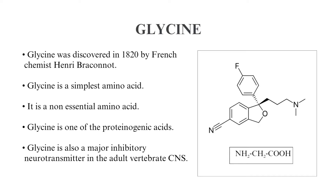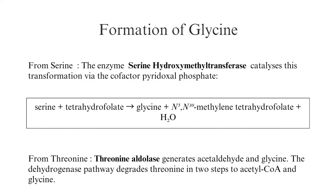Formation of Glycine from Serine: The enzyme serine hydroxymethyltransferase catalyses this transformation via the cofactor pyridoxal phosphate. From Threonine: Threonine aldolase generates acetaldehyde and glycine. The dehydrogenase pathway degrades threonine in two steps to acetyl-CoA and glycine.